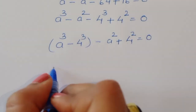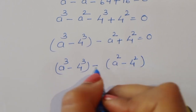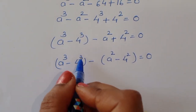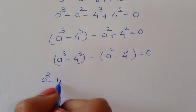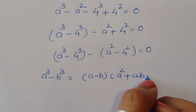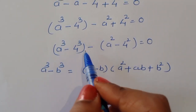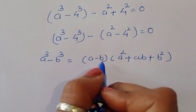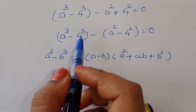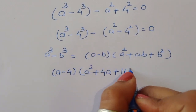For the cube terms, we apply the formula a³ - b³ = (a - b)(a² + ab + b²). Applying this to a³ - 4³, we get (a - 4)(a² + 4a + 16). Then we subtract the square terms: minus (a² - 4²).